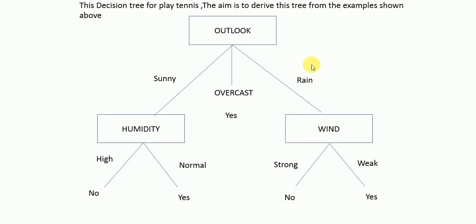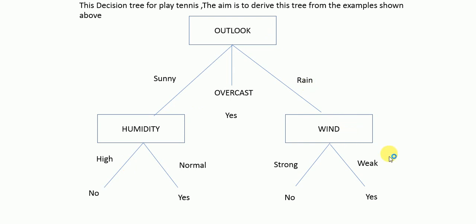The decision tree formed from this data starts with the outlook attribute at the root. Outlook has three subtypes: sunny, overcast, and rainy. For overcast, all examples are yes, so there is no further subdivision. For sunny, the next attribute selected is humidity, giving one part of the tree. For rainy, another subtree is formed accordingly.